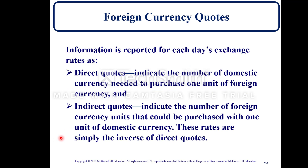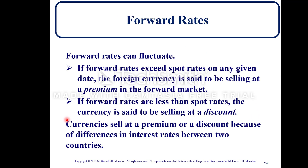Information is reported for each day's exchange rate as direct quotes or indirect quotes. A direct quote indicates the number of domestic currency units needed to purchase one unit of foreign currency; indirect quotes are simply the inverse of direct quotes. Forward rates can fluctuate: if forward rates exceed spot rates, the foreign currency is said to be selling at a premium. If forward rates are less than spot rates, the currency is selling at a discount. Currencies sell at a premium or discount because of differences in interest rates between two countries.